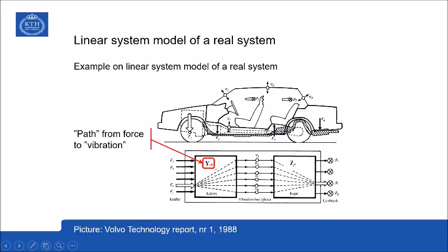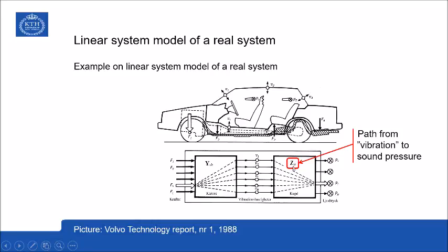To describe the path from the exciting forces to vibrations in the cabin, the car cabin. Here are the vibration velocities. And then, in order to end up in sound pressures at the driver's position and the passenger positions, they used a second frequency response function matrix to describe the path from vibration velocities to sound pressures.